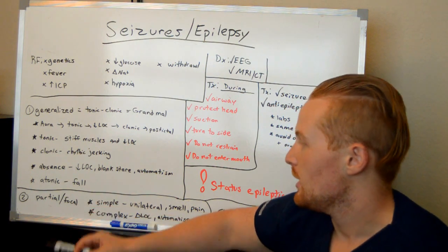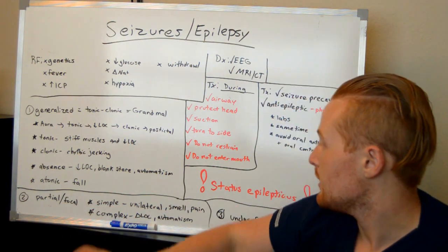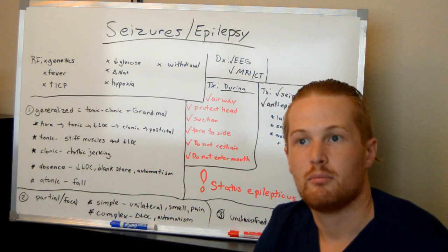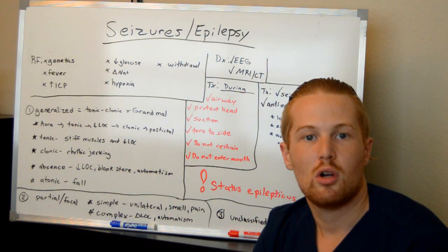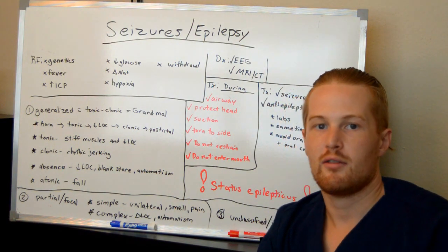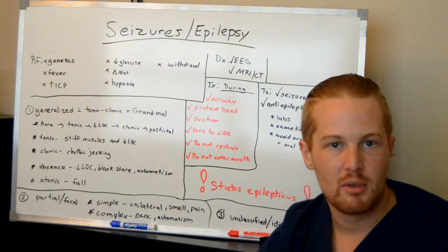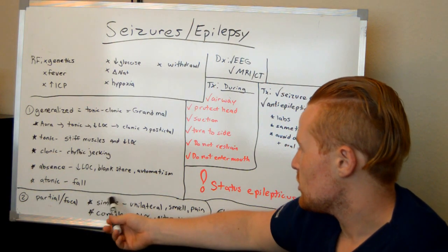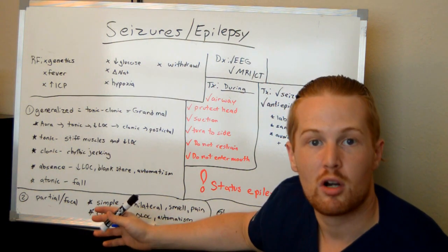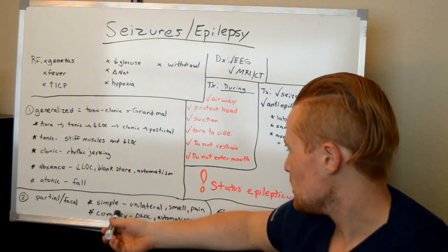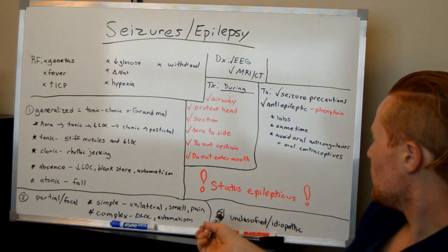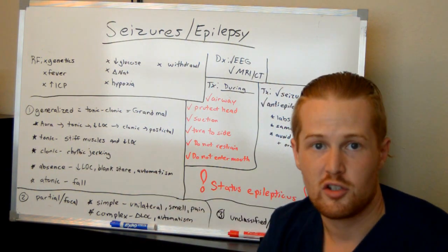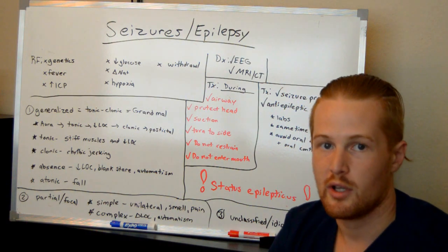A partial or focal seizure means it affects only a limited part of the body — tonicity and rhythmic jerking in one extremity or one side. Simple partial means only part of the body is affected; complex partial also involves loss of consciousness. The third category, unclassified or idiopathic, means it didn't fit the other categories — and this is actually the majority of seizures you'll see.